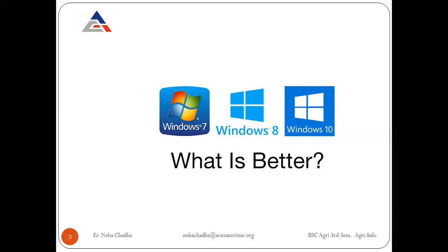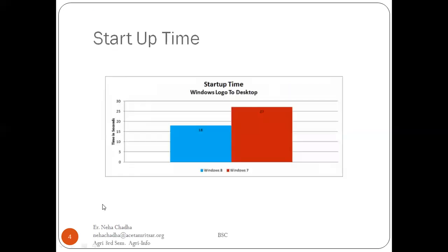The application software may vary from computer to computer, from person to person, because the usage of each and every person is different. These are the logo signs — Windows 7, Windows 8, Windows 10. Now comparing the features of Windows 7 with Windows 8 by having some graphs.